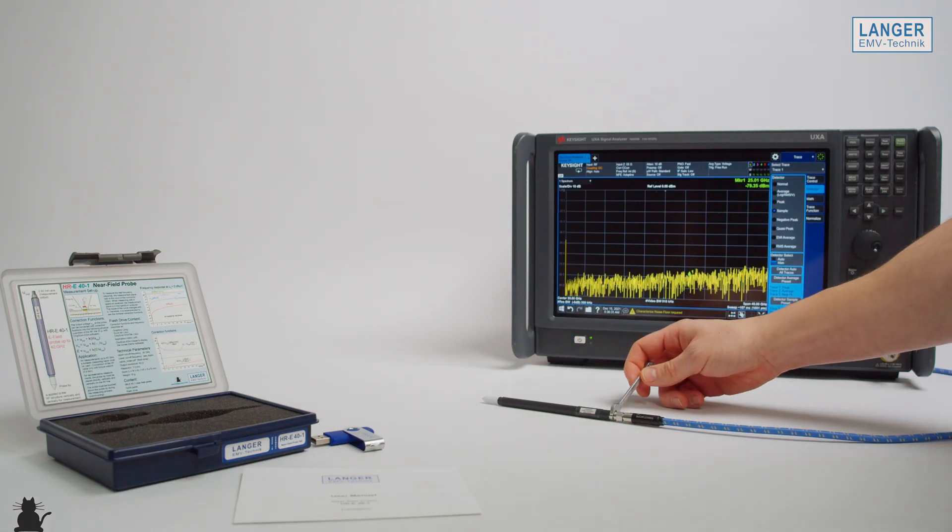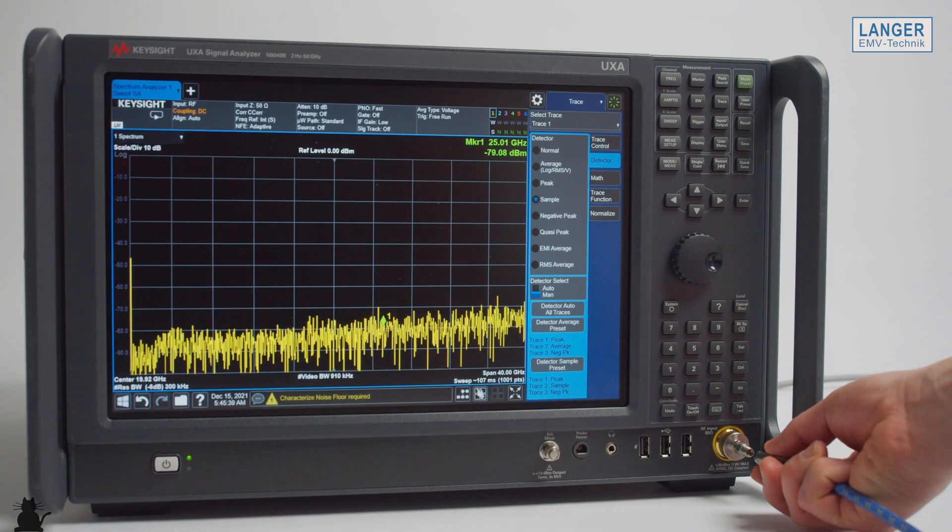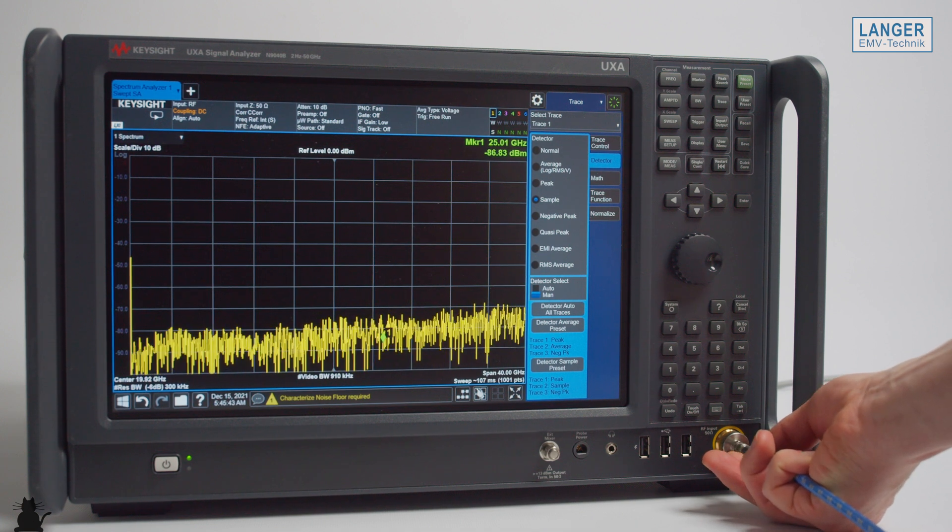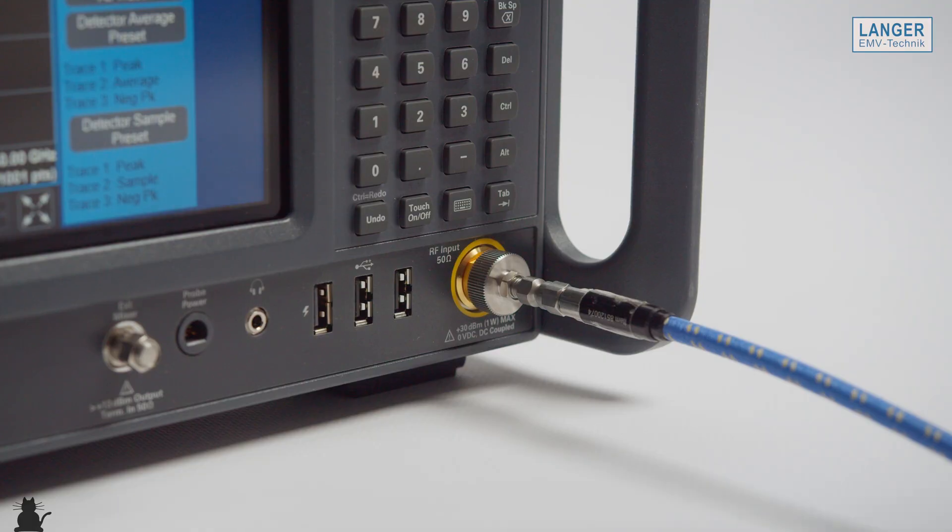The cable connected to the probe must be connected to the 50 Ohm input of a spectrum analyzer or network analyzer and also secured using a torque wrench.